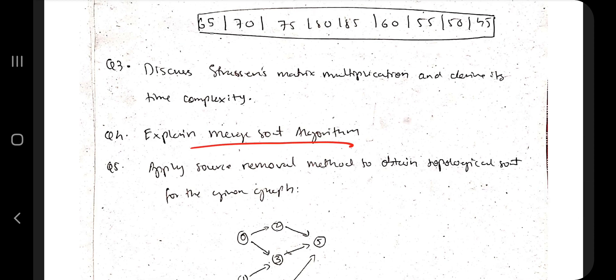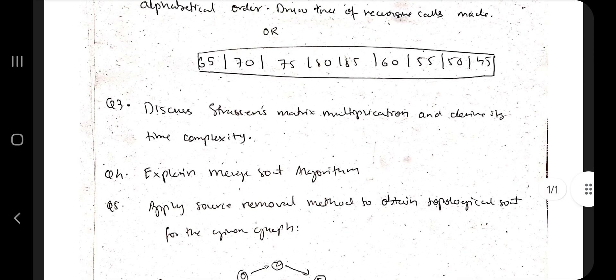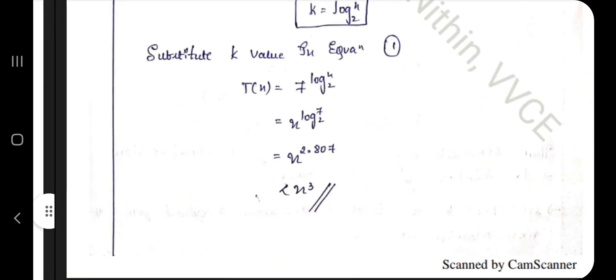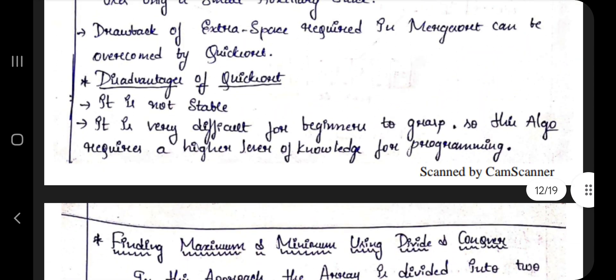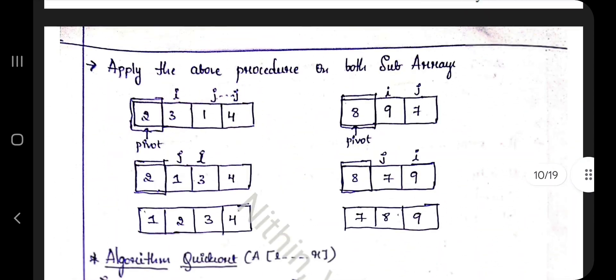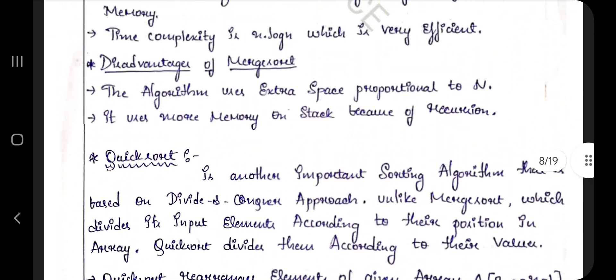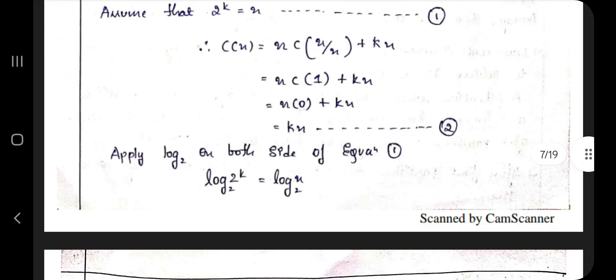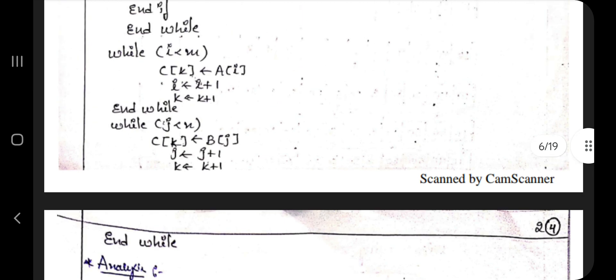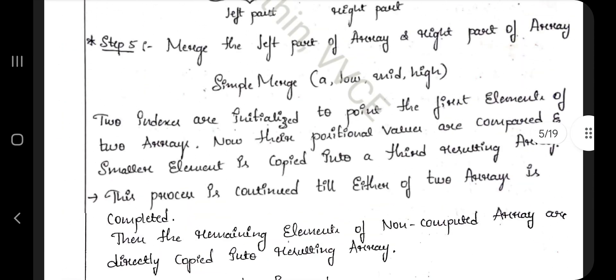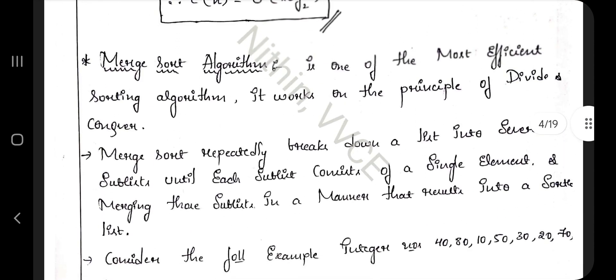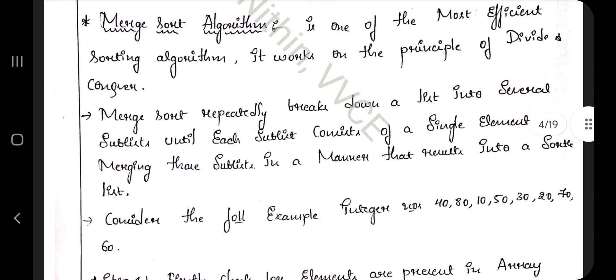Coming to merge sort algorithm - they can give you a list to merge and sort. You need to know the definition, the theory regarding how it works, analyze its time complexity, write its algorithm, and explain using an example. Write the advantages and disadvantages - all the points I mentioned you must write.